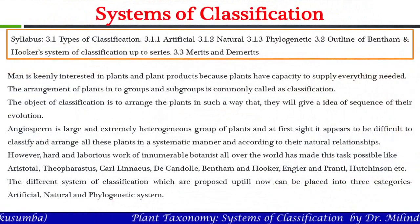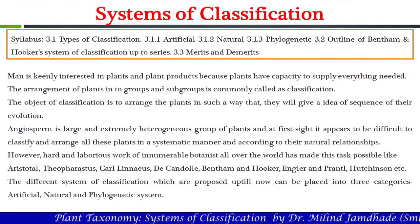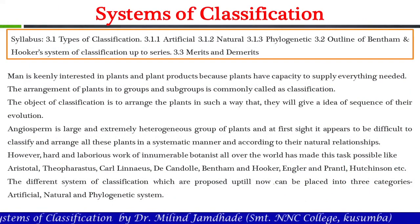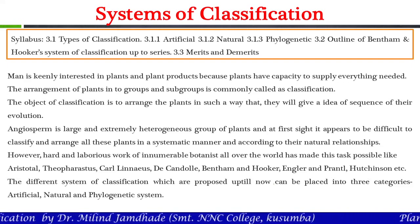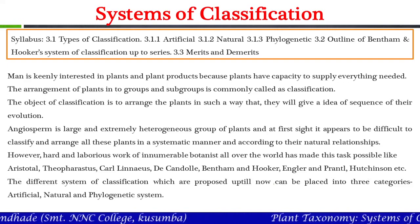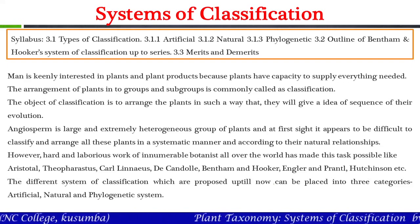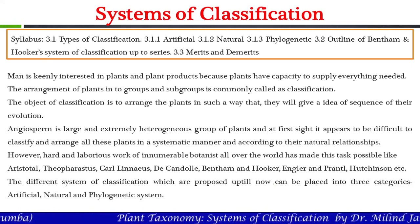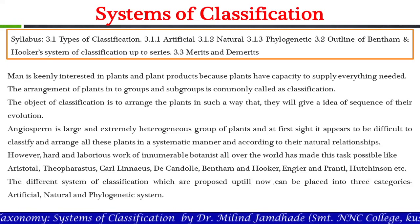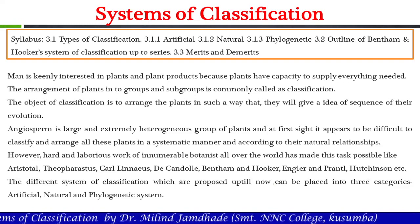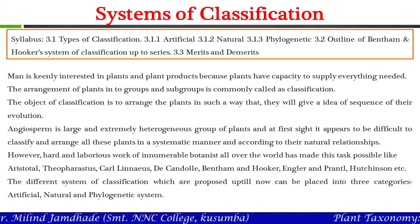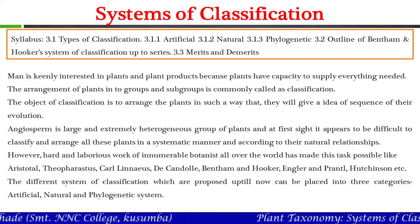In this chapter, we are going to study various aspects like types of classification, in which we are going to study artificial, natural and phylogenetic system of classification. Then the outline of Bentham and Hooker system of classification up to its series level and its merits and demerits. In the present video, we are going to discuss the first part — the types of classification.